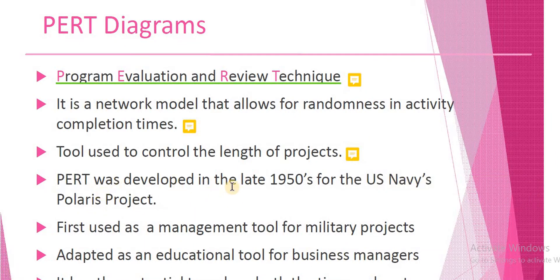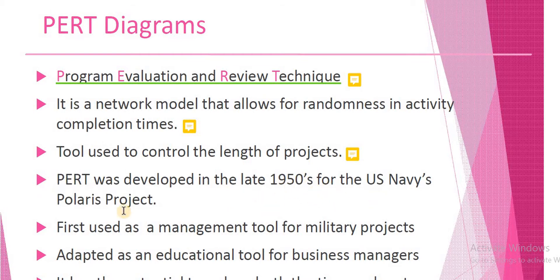PERT diagram was developed in the late 1950s for the US Navy's Polaris project. It was first used as a management tool for military projects.